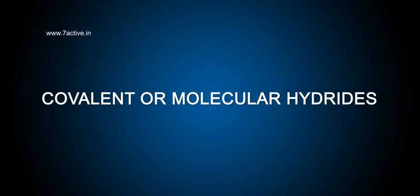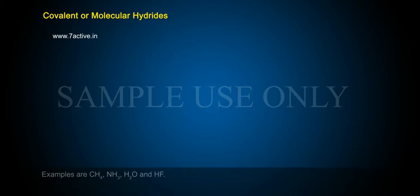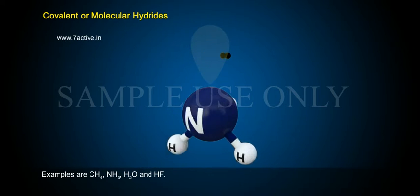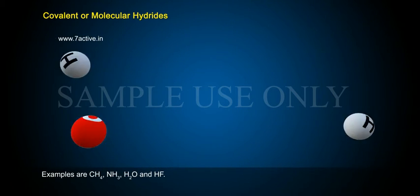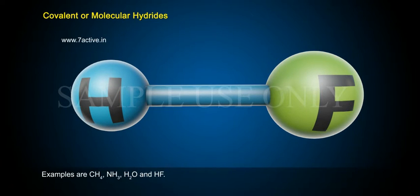Covalent or molecular hydrides: Dihydrogen forms molecular compounds with most of the p-block elements. Examples are CH4 (methane), NH3 (ammonia), H2O (water), and HF (hydrogen fluoride).